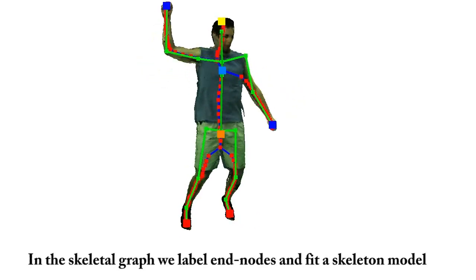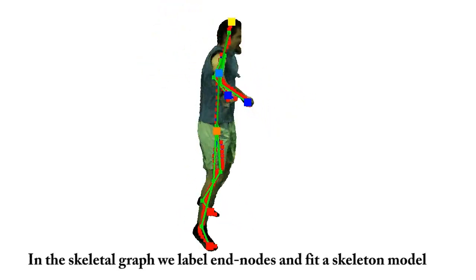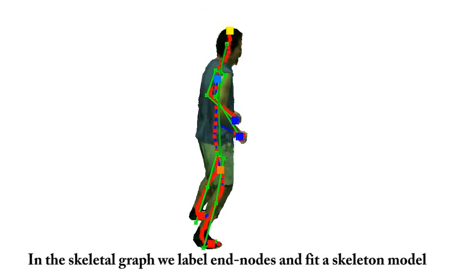Then, we label end nodes such as hands and feet in the skeletal graph and fit a skeletal model to the data.